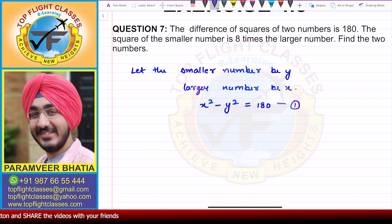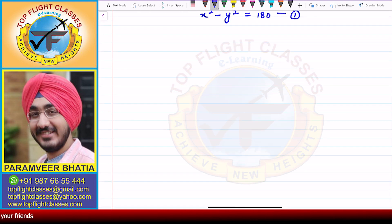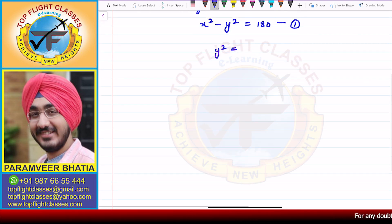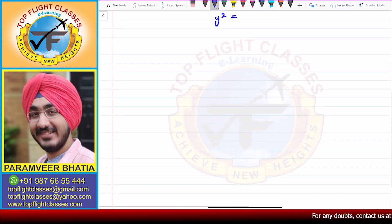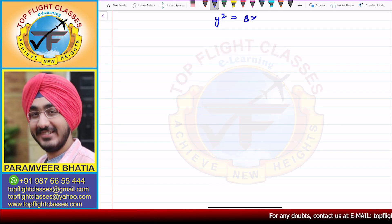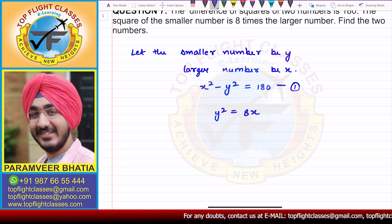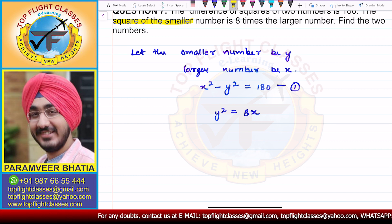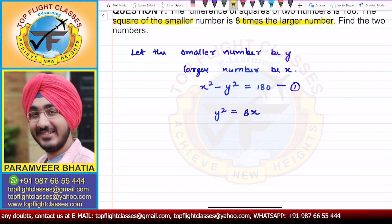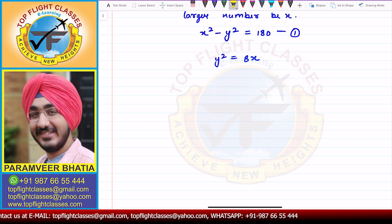The square of the smaller number is 8 times the larger number. That means y squared equals 8 times x. So, y² = 8x. That is the second equation.